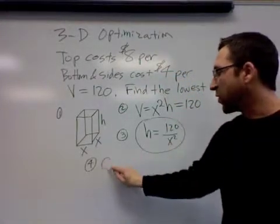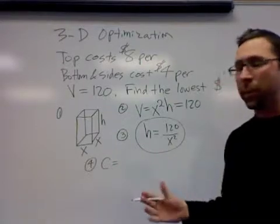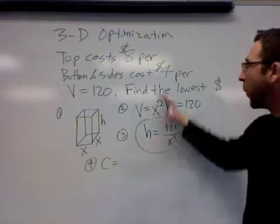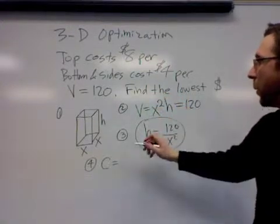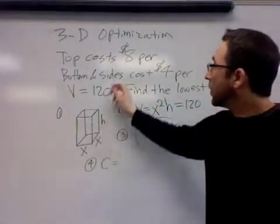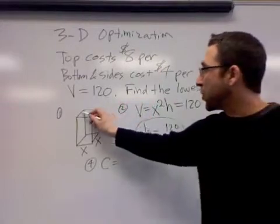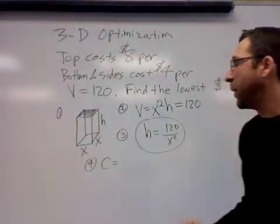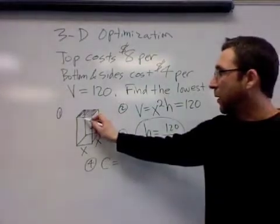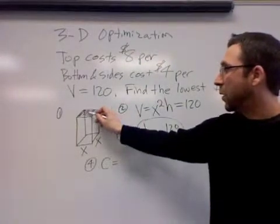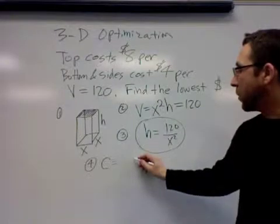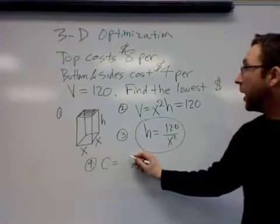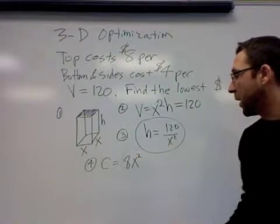We need to make an equation for the cost of actually building this box. That's going to combine some surface area themes along with the prices. If we're going to build this box, the top costs eight dollars per square inch, and the top has an area of x times x, or x squared. So the amount of material it takes to build the top is x squared, and it's eight dollars per, so it'd be eight times x squared.